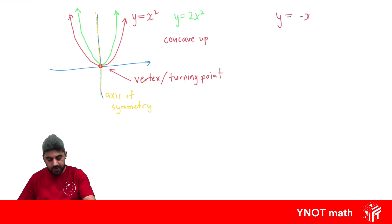If we have a parabola with the equation y equals minus x squared, this just flips the parabola down and we say this parabola is concave down.